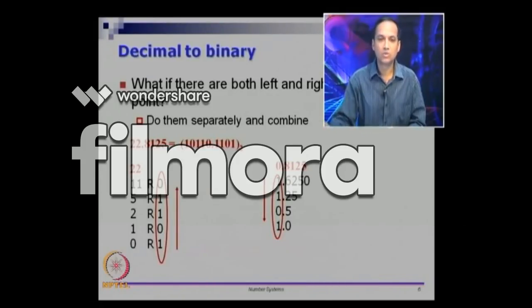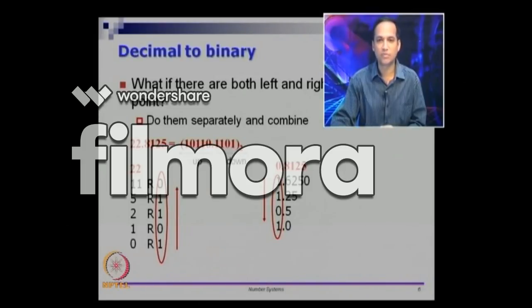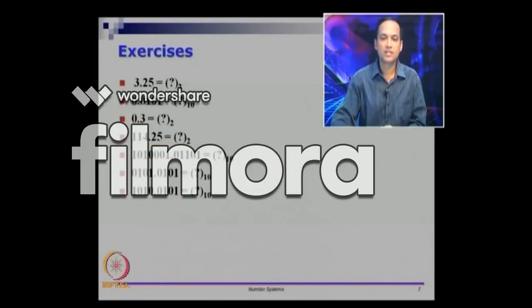Starting from the rightmost bit and assigning weights: 2 power minus 4, 2 power minus 3, 2 power minus 2, 2 power minus 1, 2 power 0, 2 power 1 and so on. Add all of that up and it should give you 22.8125. I suggest you go and try it out yourself. Reading bottom to top gives 1 0 1 1 0 for the integer part, and top to bottom gives 1 1 0 1 for the fractional part — just remember that. There are several exercises I would like you to try.